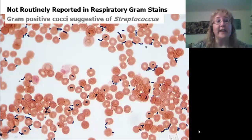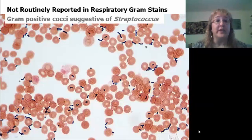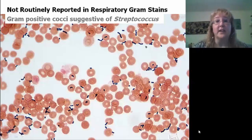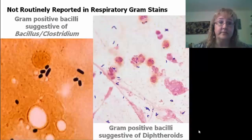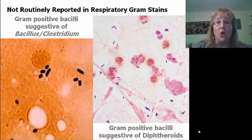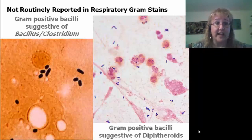Which organisms would we automatically report as mixed flora in a respiratory gram stain? Gram-positive cocci suggestive of Streptococcus, which we might report in a wound, tissue, or fluid specimen, would in a routine respiratory gram stain be lumped into the mixed flora category. Similarly, gram-positive rods suggestive of Bacillus or Clostridium, or diphtheroids/Corynebacterium, would also become part of the mixed flora for reporting.